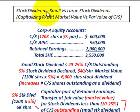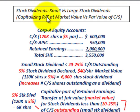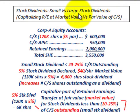What we're going to be going over here are stock dividends, and we're going to compare small stock dividends to large stock dividends. The key difference is not only the number of shares issued, but also where we capitalize retained earnings — at market value for a small stock dividend, or at par value for a large stock dividend.